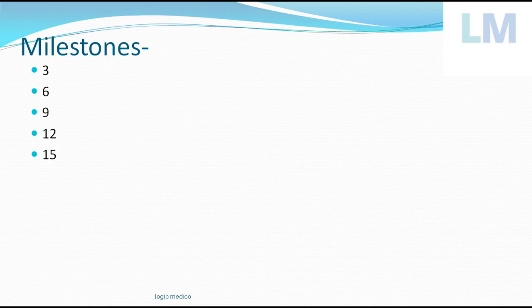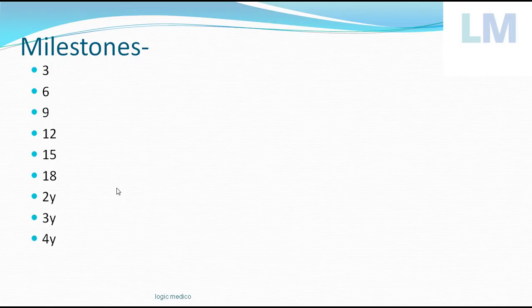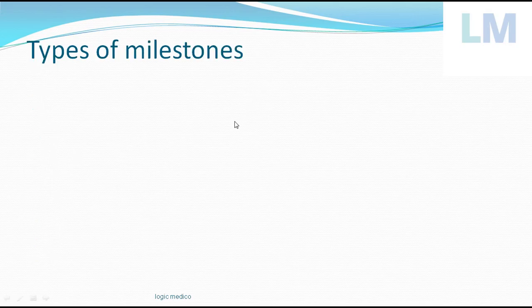This milestone table can easily be remembered if you know the three-months interval. At three months, six months, nine months, 12 months, 15 months, and 18 months, there is a three-month gap between each age group up to 18 months — that is one and a half years. Afterwards, we go year-wise: two years, three years, four years, and five years. The left-hand side shows the age; the right-hand side milestones will become easy once explained.